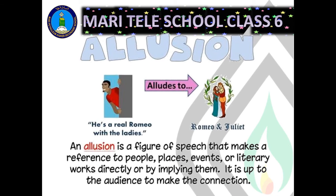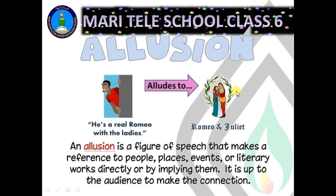Allusion means a figure of speech that makes a reference to people, places, or events — literally or by implying them — and it is up to the audience to make the connection. For example, 'he is a real Romeo with the ladies' is a reference to Romeo and Juliet. In short, we are giving reference of something to another.